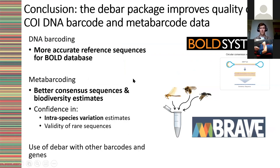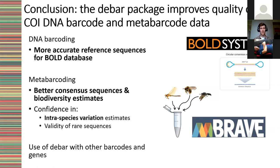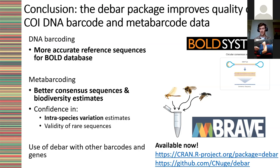In conclusion, the dbar package is able to improve the quality of CO1 DNA barcode and metabarcode data. It allows us to generate more accurate reference sequences for the BOLD database without re-sequencing as many samples, saving cost. In metabarcoding, it provides better consensus sequences and better biodiversity estimates, and we can have confidence in intraspecies variation estimates knowing individual sequences are likely error-free. As a future direction, dbar supports different models, so it can be extended to other DNA barcodes and genes — it's a barcode- or gene-specific denoiser that can be readily reapplied. It's available on CRAN and also through the development version on GitHub.